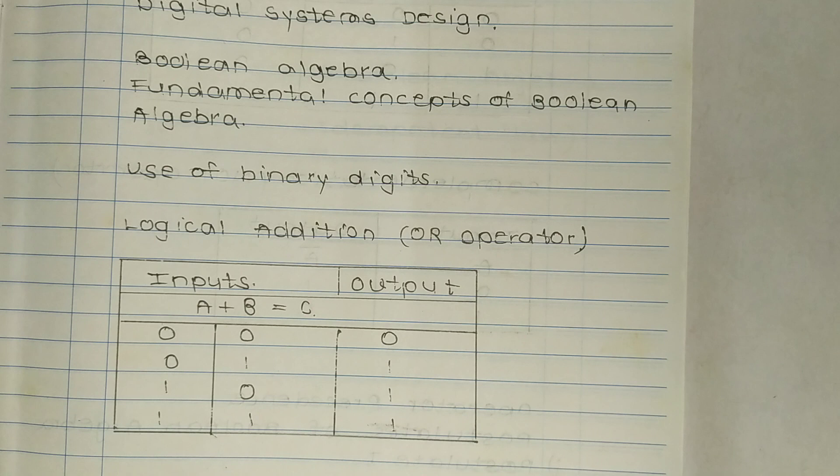only four (2 raised to 2) combinations of inputs are possible. The table gives resulting output values for each of the four input combinations. Such a table is known as a truth table. Observe that the result is 0 only when both input variables are 0.